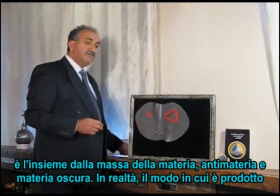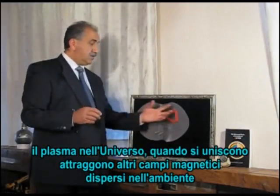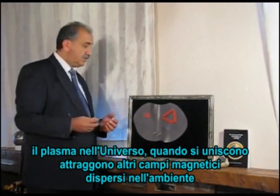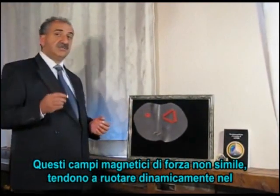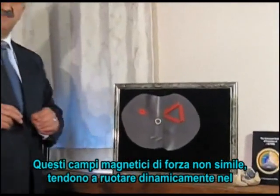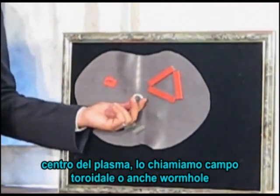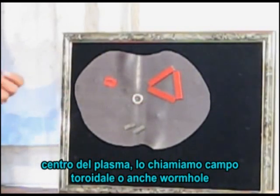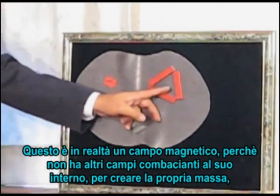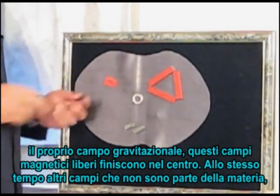In reality, the way the plasma comes to be made in the universe — when they come together, they attract other magnetic fields which are loose within the environment. Those loose magnetic fields, which are not similar in strength, tend to be dynamically rotating within the center of the plasma. We call this a torus field. In theoretical physics, they call it a wormhole. This is actually a magnetic field that does not have any other matching fields within it to create its own mass or its own gravitational field, so these loose magnetic fields rotate within the center.